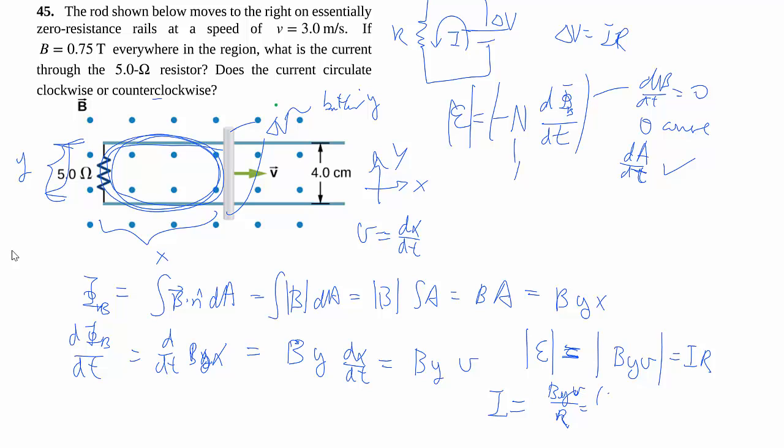If you want proper numbers to sub in, 0.75 Tesla times 0.04 meters, that's the vertical length, times 3 meters per second, all over 5 ohms, give you a certain amount of amps, 0.018, so 18 milliamps.